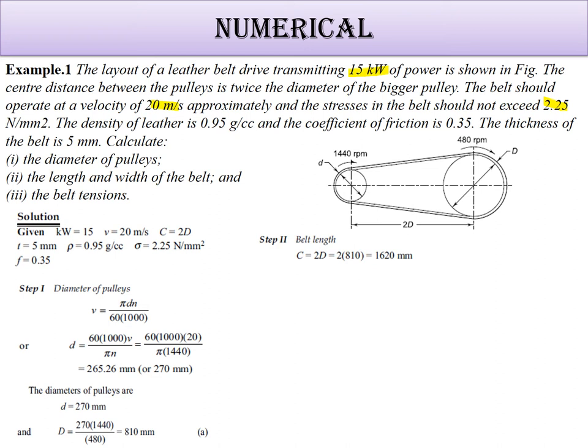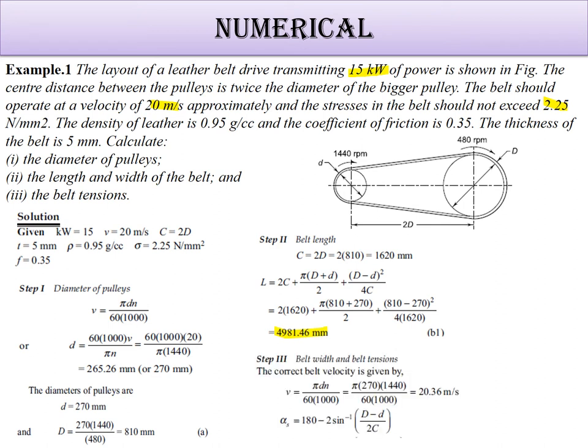The center distance is given as 1620 mm. The length formula is L equals 2C plus pi times capital D plus small d over 2. We put all the values and get the exact length as 4981.46 mm.